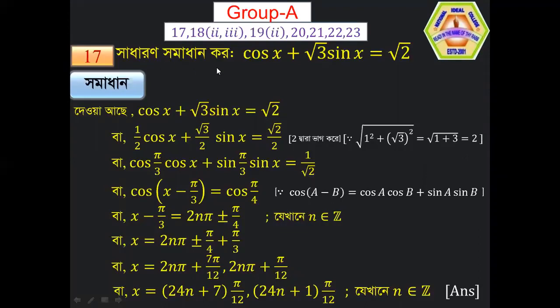We have to solve: cos x + √3 · sin x = √2.